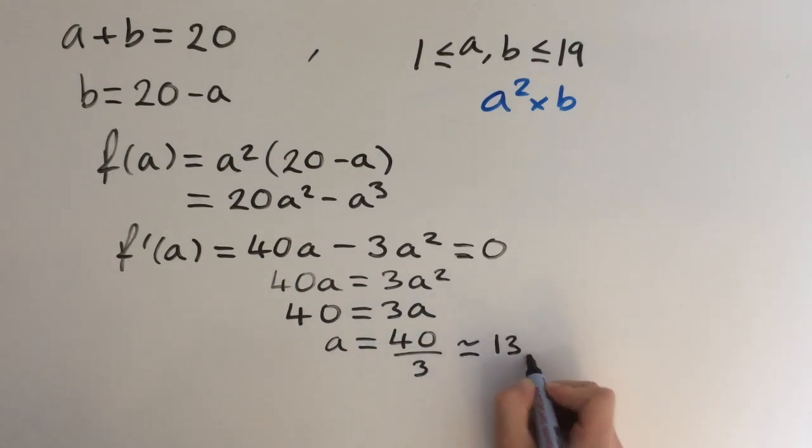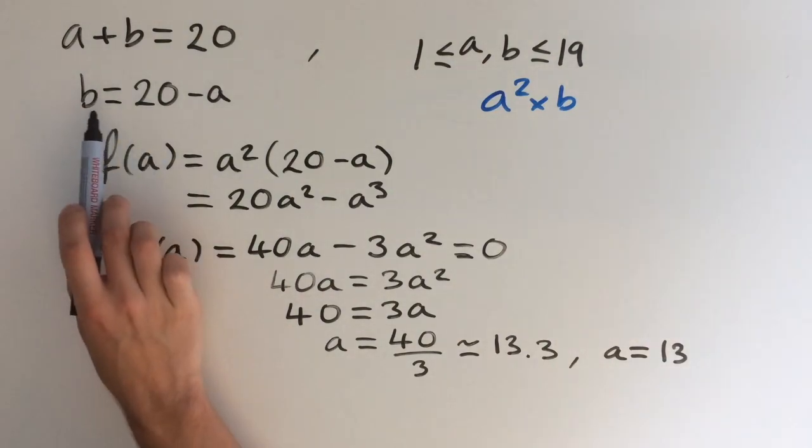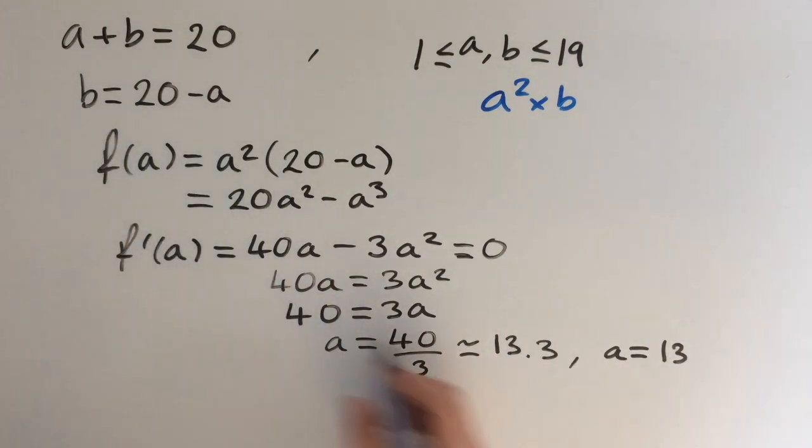This is roughly 13.3, which is obviously not an integer. So we're just going to take the value of a equals 13, the closest integer. Okay, so if we use this expression up here, b equals 20 minus a, and for a equals 13, we're going to get b equals 7.